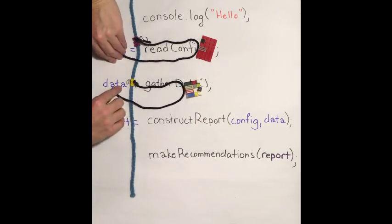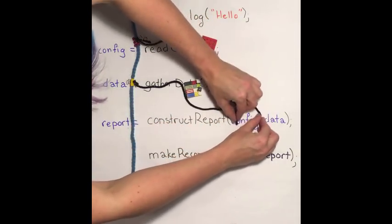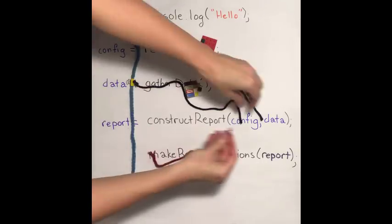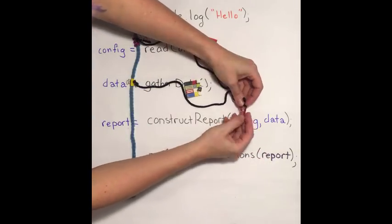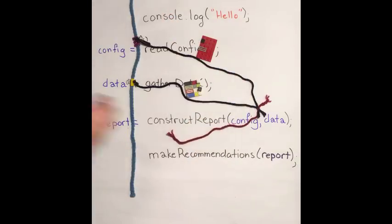Then, when we go to construct report, we can pass the ends of the string into the construct report function. So it ties its processing onto the end of both the config and the data. It needs both of those values in order to do its work.